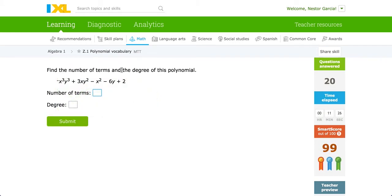And lastly, find the number of terms and the degree of this polynomial. Number of terms. Here's our first term. Addition is the start of the second one. Subtraction is the start of the third. The minus is the start of the fourth. And the addition is the start of the fifth. A total of five terms.